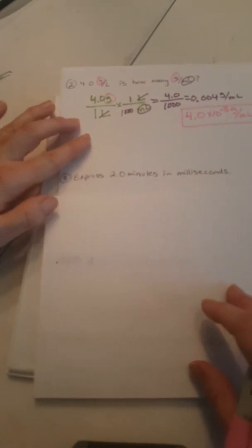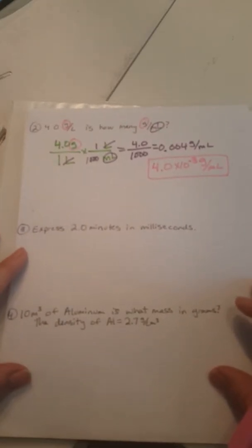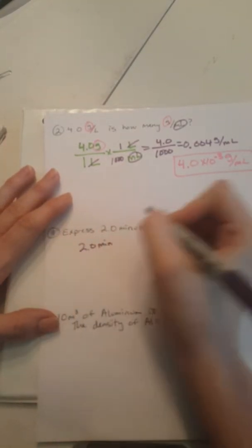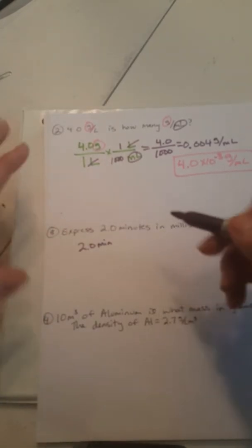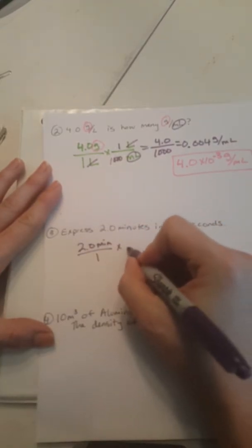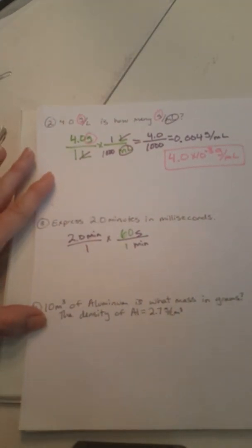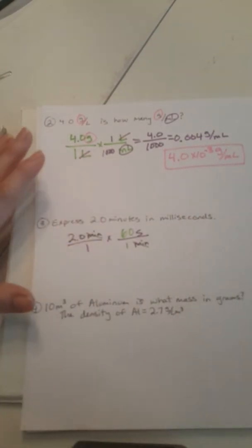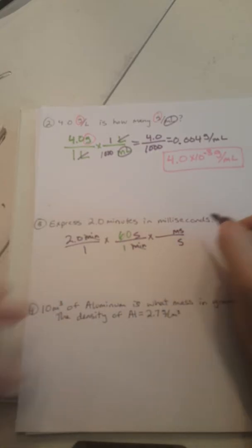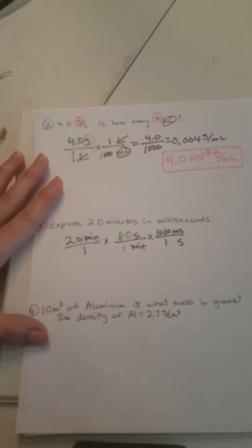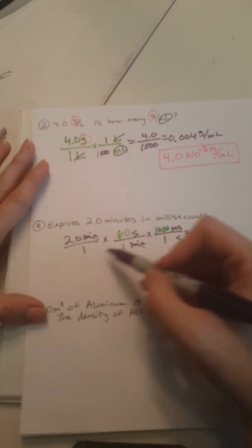Number three: express 2.0 minutes in milliseconds. I start with 2.0 minutes. I don't know how many milliseconds are in a minute, but I know there are 60 seconds per one minute, so I use that first. That handles the minutes, but now I have seconds and I want milliseconds. So I put seconds on the bottom to cancel, converting into milliseconds. The prefix milli means a thousand, so there are 1000 milliseconds per second.